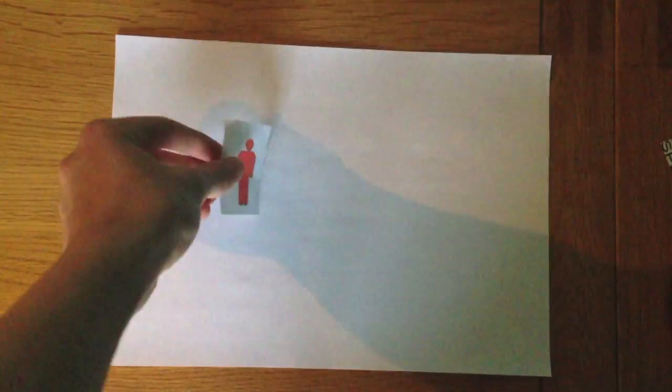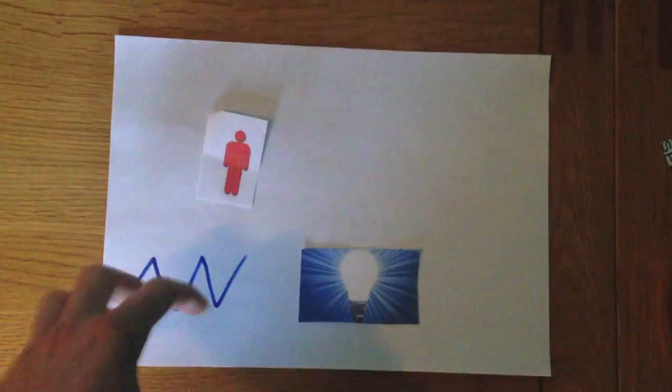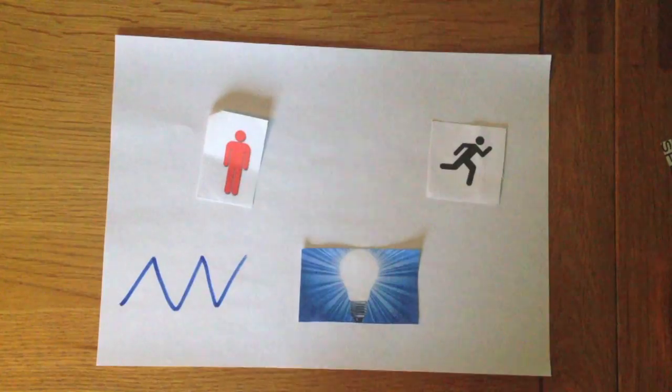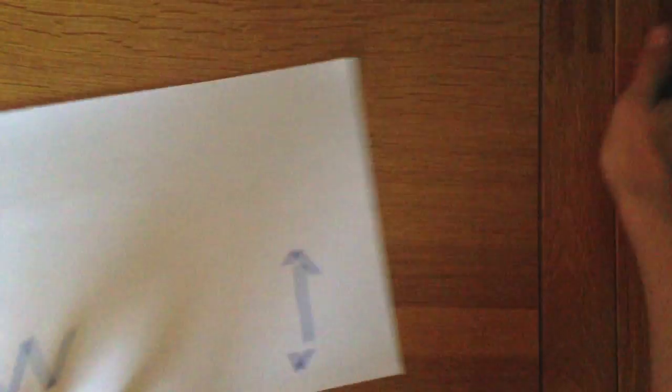In that video, we saw that for those who weren't moving, light travelled in a zigzag pattern, and for Niall it travelled up and down.